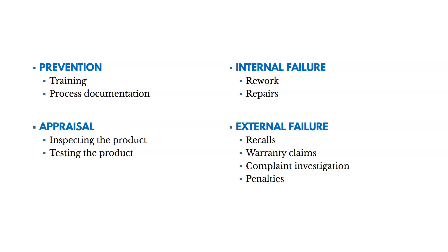These are different types of costs in each quality category. In prevention, it could be things like training and process documentation to make sure we always build a quality product. Appraisal could be inspecting and testing the product during production. Internal failure could be rework and repairs — this is after the team has completed a product but before shipping. External failures are when the defect reaches the customer, and costs could include recalls, warranty claims, complaint investigations, and penalties.